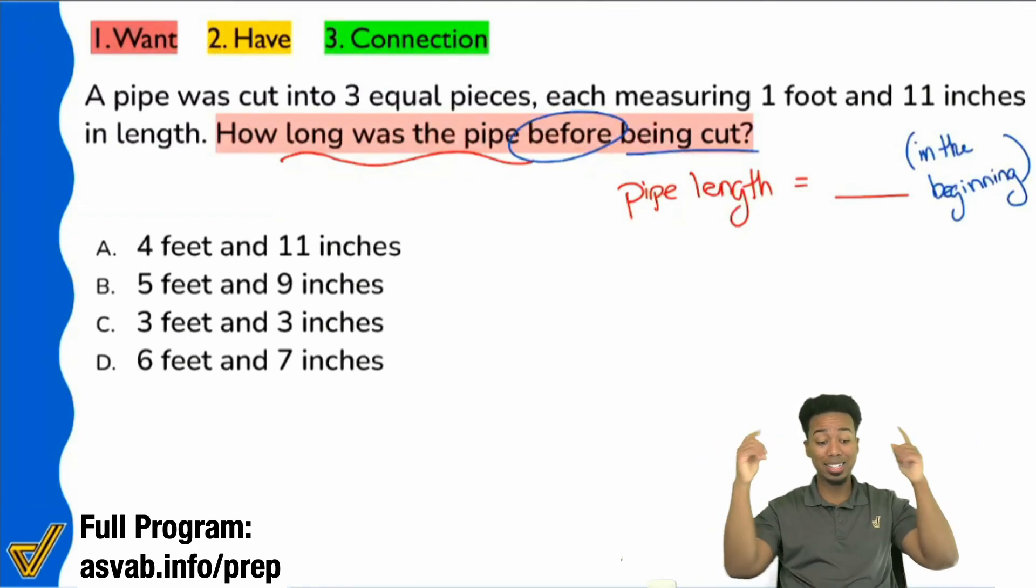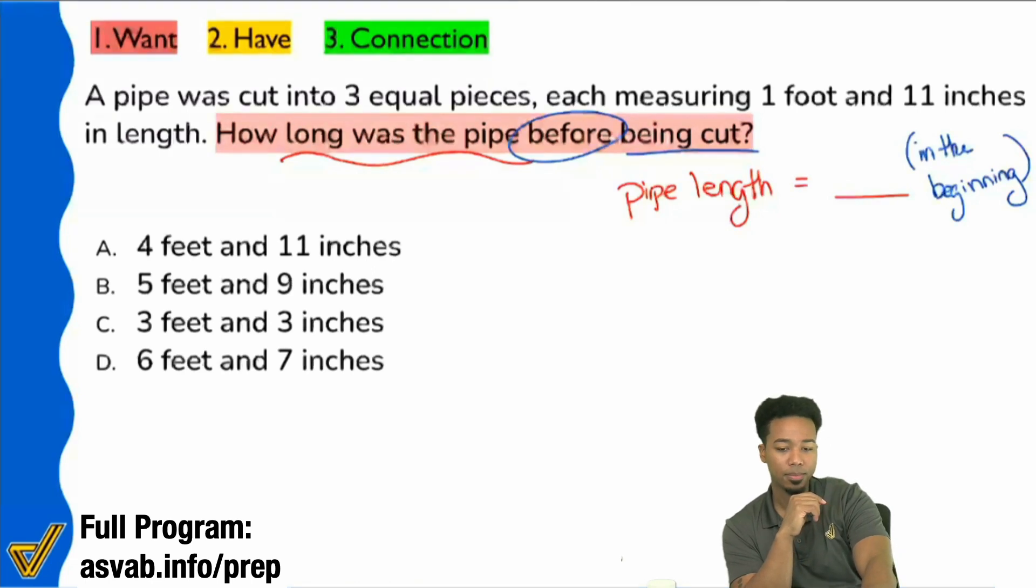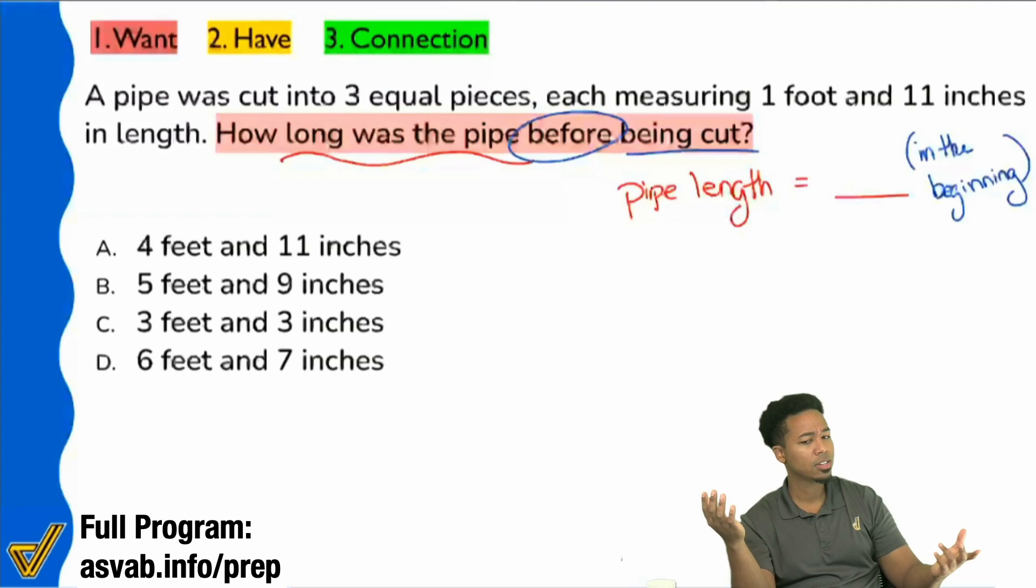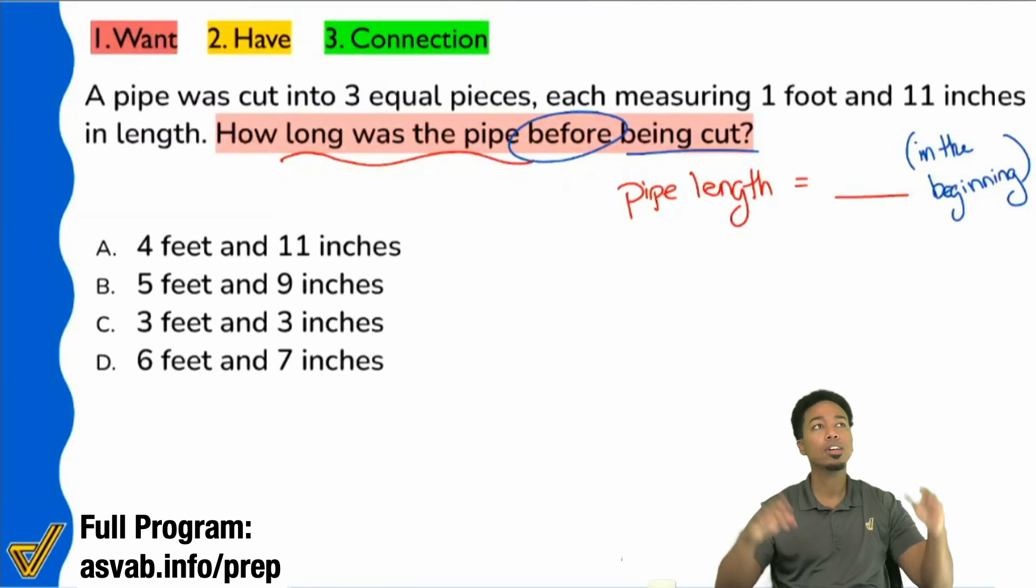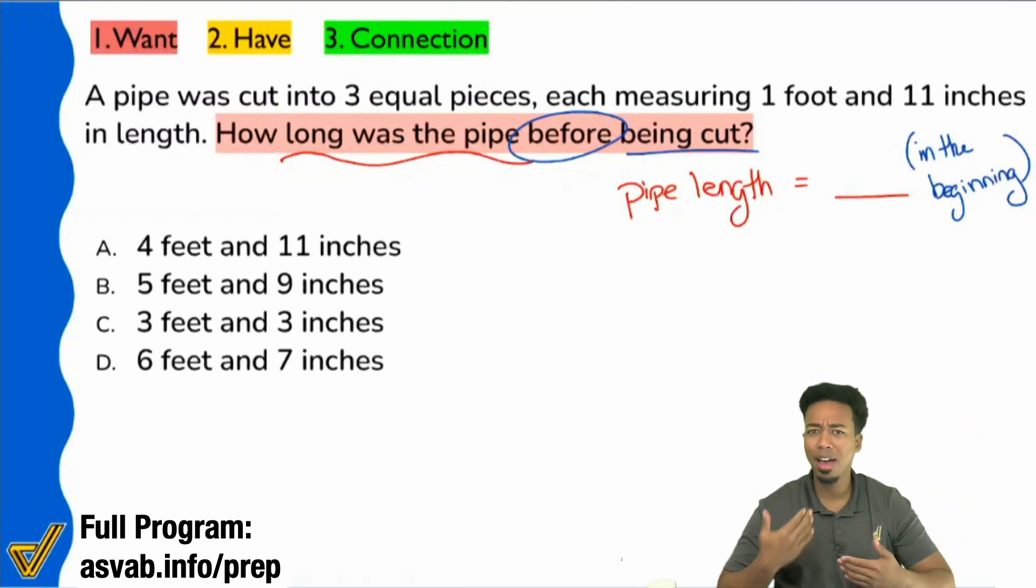Let's think about how we can translate that English into math. If I'm moving forward in the problem, I had this pipe, I cut it into three equal pieces - what happened in terms of math? What happened to the pipe, to the original length of the pipe? Nicholas says divided. So that pipe got divided into how many pieces? By three. So we had a pipe, we cut or divided it into three equal pieces, and now we have each pipe being one foot and 11 inches. Does that story make sense given what we just read?